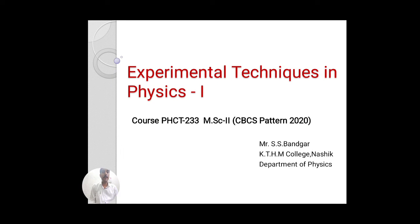Hello everyone. Today I am going to take your paper third, PSCT 223, that is the third paper in the choice based credit system pattern by 2020. The course is experimental techniques in physics. In this course we have four modules. I have taken the first two modules and the remaining two are taken by another instructor. The first module is signal analysis and sensors, and the second module is vacuum physics.